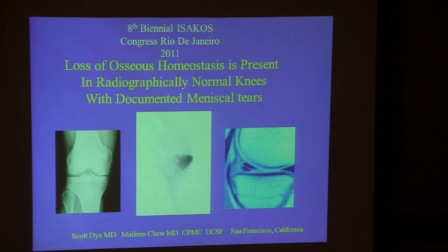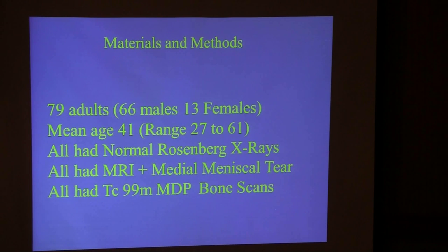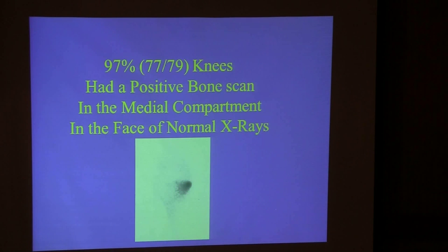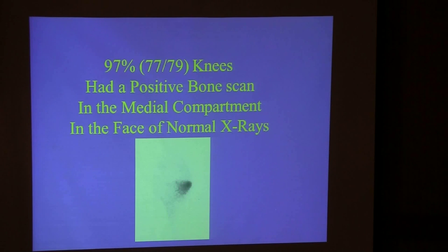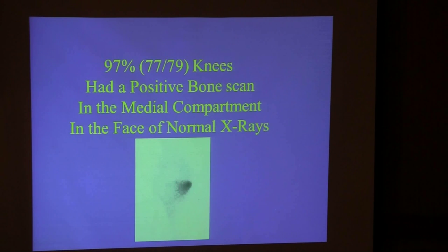We reported results in a group of 79 adults with medial meniscus tears in Rio in 2011. An astounding 97% of these patients — all of whom had normal radiographs, Kellgren-Lawrence zero — had positive bone scans in the face of normal x-rays. If you only get an MRI, which most orthopedic surgeons do, you will not know this loss of homeostasis is occurring.